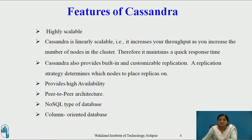These are some of the features of Cassandra. Cassandra is highly scalable — that is, it is massively scalable. It is also known to have elastic scalability. Scalability is the feature of expanding or reducing the system as per the requirement.